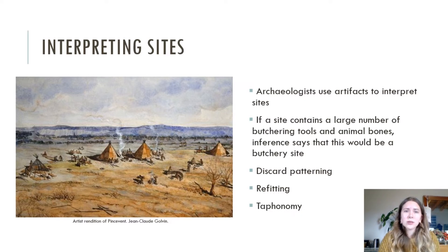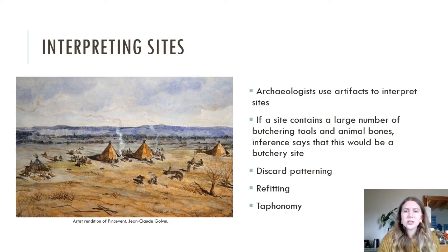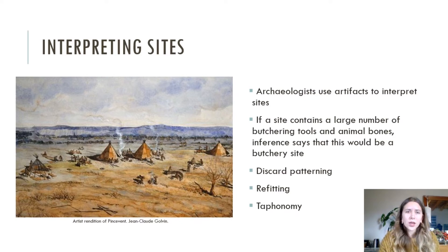Aside from determining site use, lithics can also be helpful in understanding site formation processes, which can be done by studying the distribution of artifacts throughout a site, interpreting levels of site disturbance through artifact movement, and assessing the significance of taphonomic factors such as roundedness, thermal alteration, and patina. For these kinds of studies, spatial data is also of high importance to interpret the assemblage.